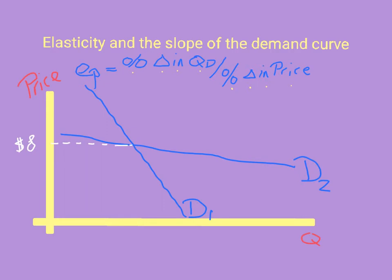Now let's see what would happen if the price of the product decreases. We'll start at $8 and then make it go down to $7. At $8, this is what the quantity demanded is for both curves, D1 and D2. Now let's go to $7. If we go to demand curve 1, we notice that the quantity has increased a little bit — maybe the quantity goes from 20 to 22.